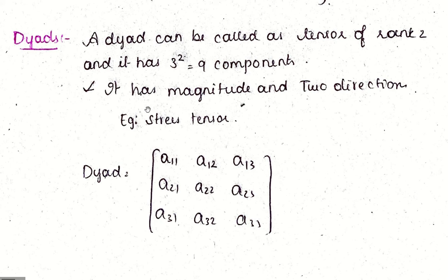is equal to 9 components. It has magnitude and two directions. For example, stress tensor. It is represented like this - it has 9 components, 3 by 3, 3 multiplied by 3, 9 components.